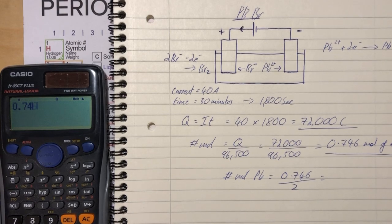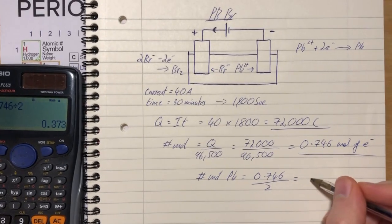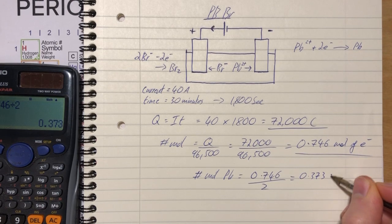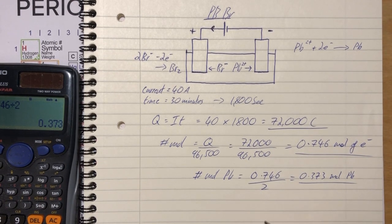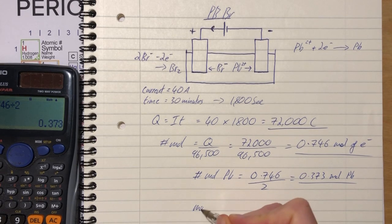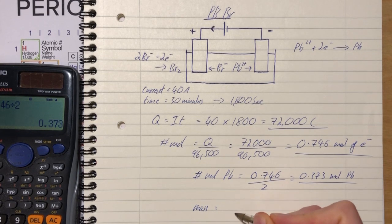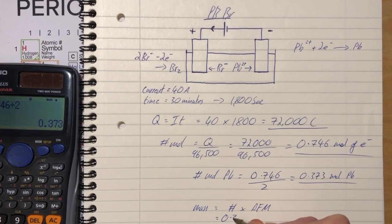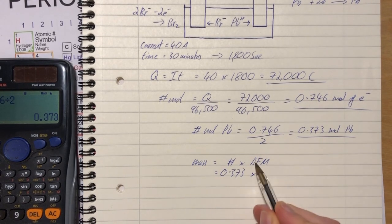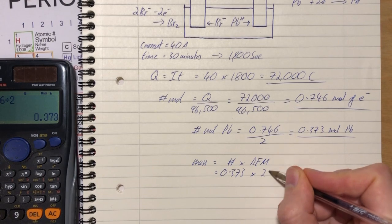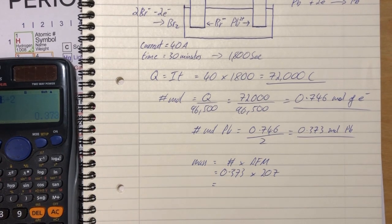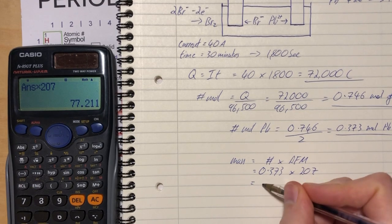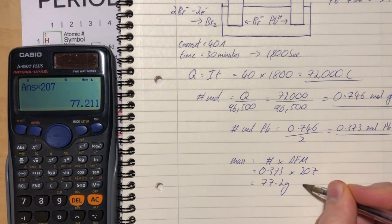The number of moles of Pb = 0.746 ÷ 2 = 0.373 moles of Pb. Now let's find the mass. Mass equals the number of moles times the RFM (relative formula mass). So mass = 0.373 × 207 (the RFM for lead) = 77.2 grams of Pb.